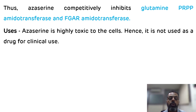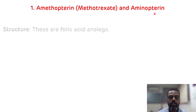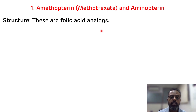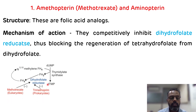Those are the examples of purine nucleotide synthesis inhibitors. Now we will see pyrimidine nucleotide synthesis inhibitors. The first example of anti-cancer drugs acting as pyrimidine nucleotide synthesis inhibitors are methotrexate and aminopterin. As already discussed, they are folic acid analogs that competitively inhibit dihydrofolate reductase, inhibiting the conversion of dihydrofolate into tetrahydrofolate. This is shown in the figure illustrating the mechanism of action of methotrexate and aminopterin as pyrimidine nucleotide synthesis inhibitors.